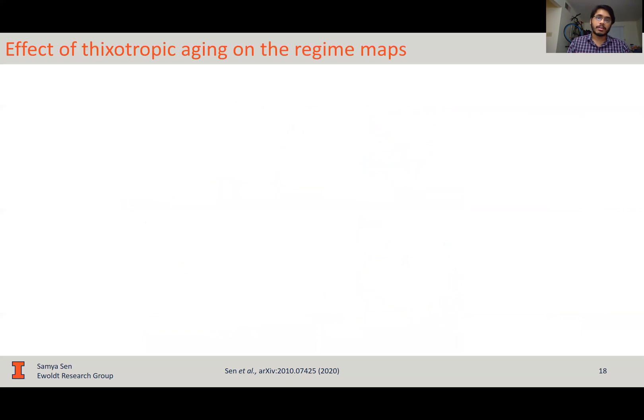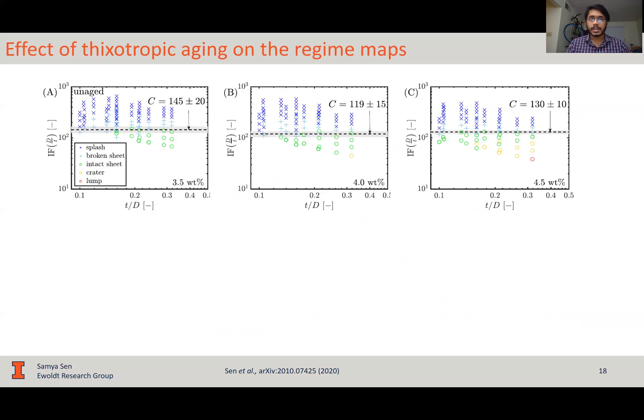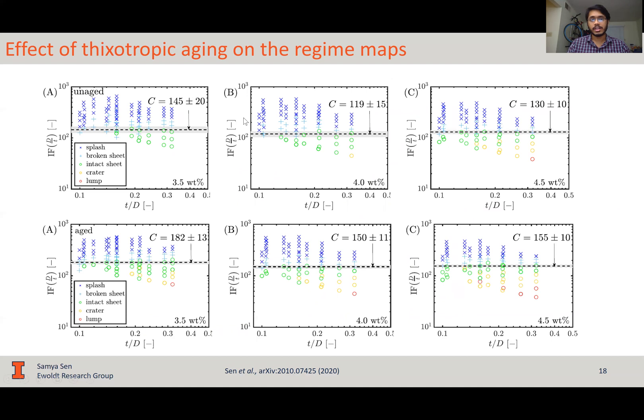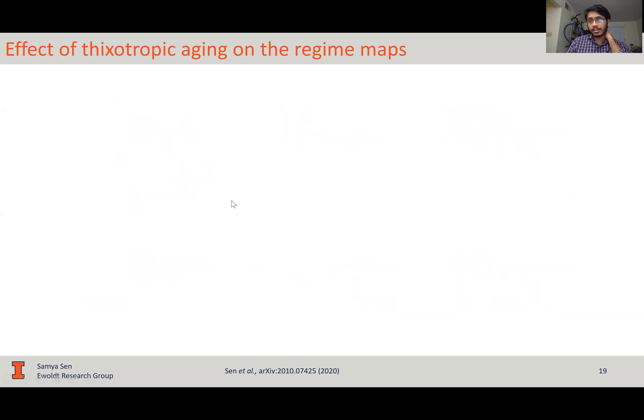Now, we can also look at this quantitatively as we plot the regime maps. The first three, the top panel, are for the unaged laponite and the bottom three are for aged laponite. Now, all the good features of the unaged laponite are not retained in this case. The value of the regime boundary, c for stick splash transition is different across the three concentrations. The values also don't match with their corresponding unaged counterparts. So, there is something going on here that we are missing.